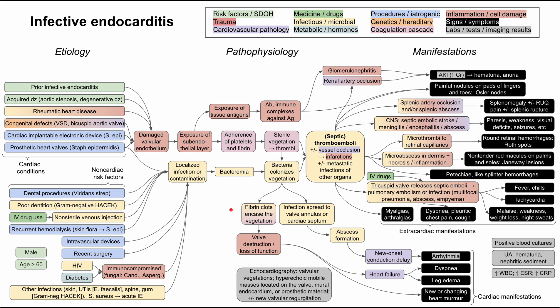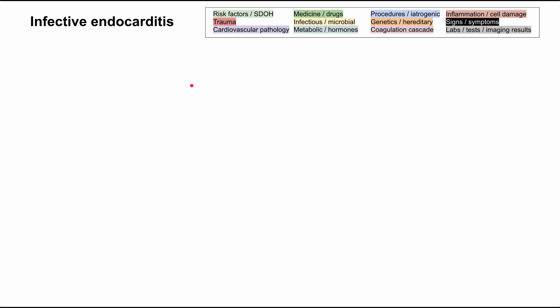This is a mechanism of disease map for infective endocarditis, sometimes just called endocarditis. I'll be talking about the etiology, the pathophysiology, and the manifestations of endocarditis. As in all of these flowcharts, each of these bubbles is color-coded according to the legend up here. I'll be clearing each of these items and talking through them one by one. So let's get started.